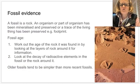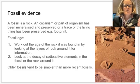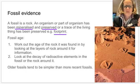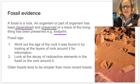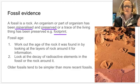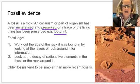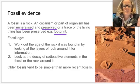A fossil is a rock formed when an organism or part of an organism has been mineralized, turning into rock which preserves it. It could also be a trace of a living organism, for example a footprint or feces. We can work out how old a fossil is by relative dating, comparing it to surrounding rock layers, or absolute dating, which looks at radioactive elements in the fossil or rock to find its actual age. Older fossils tend to be simpler than more recent fossils.